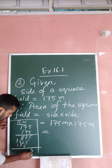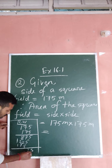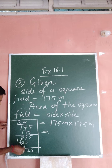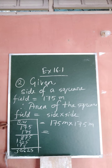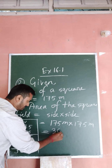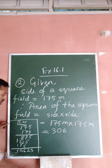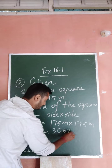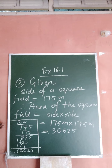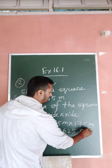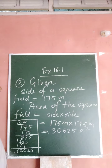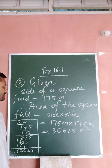So: 5×7=35, 2 carry on; 9, 9 plus 2 is 11, plus 16 — 1 carry on; 1 plus 2 is 3, 3 plus 7 is 10, 0 — 1 carry on; so 3, 3, 0, 6. Then 3, 0, 6, 2, 5. And the unit will be meter squared. That means the area of the square field will be 30625 meters squared.